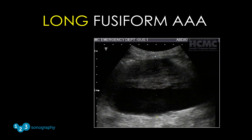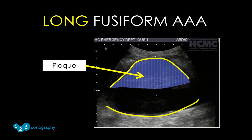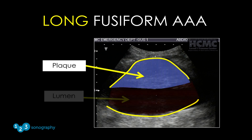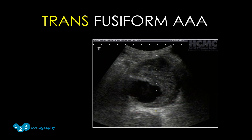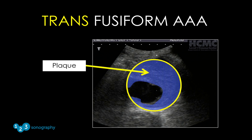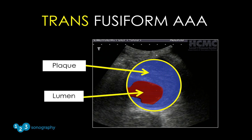Here is another longitudinal view of a fusiform type abdominal aortic aneurysm. The intraluminal plaque is on the anterior wall and the lumen is more posterior in location. This is a transverse view of a fusiform abdominal aortic aneurysm — the intraluminal plaque is located anterior and mostly to the left. Note how small the actual patent lumen is relative to the size of the entire aneurysm.